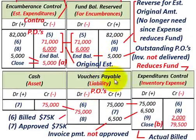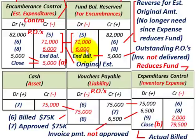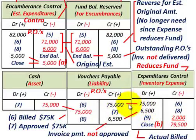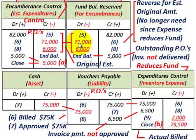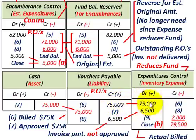When tied into vouchers payable and expenditures control: the encumbrances control and fund balance reserve are based on the original estimated amounts, while the vouchers payable and expenditures control — the actual expenses — are based on the actual billed amounts. For entry six, we reduced encumbrances control by $71,000 and fund balance reserve by $71,000, and then we credited vouchers payable for $75,000 (the actual billed amount) and debited expenditures control for $75,000.